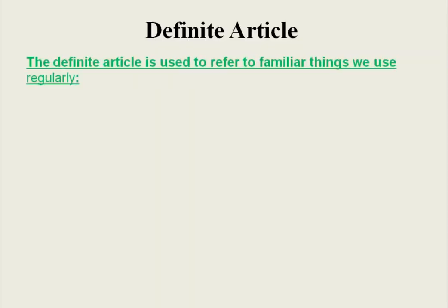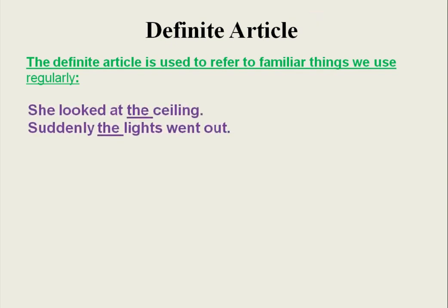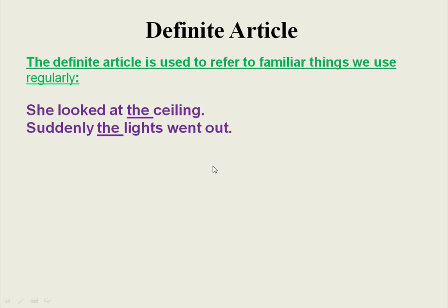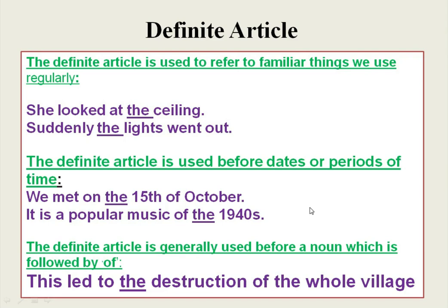The definite article is used to refer to familiar things we use regularly. For example: 'She looked at the ceiling. Suddenly, the lights went out.' Lights and ceiling are familiar things we use regularly, so we use the definite article before 'ceiling' and 'lights.'